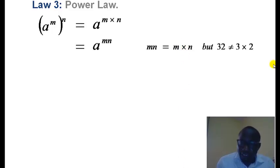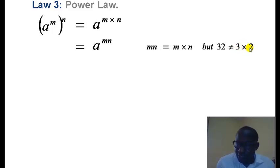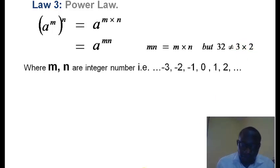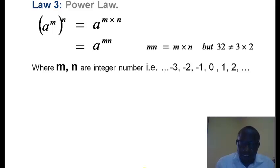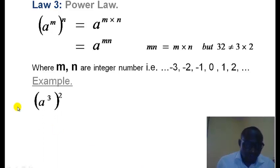However, this is not the case when numbers are put together. As can be seen, 32 is not the same as 3 multiplied by 2, because 32 is thirty-two, but 3 multiplied by 2 is 6. M and n, as used in this illustration, are integer numbers — that is, positive and negative whole numbers including 0. In our example, we look at a raised to power 3, all raised to power 2.